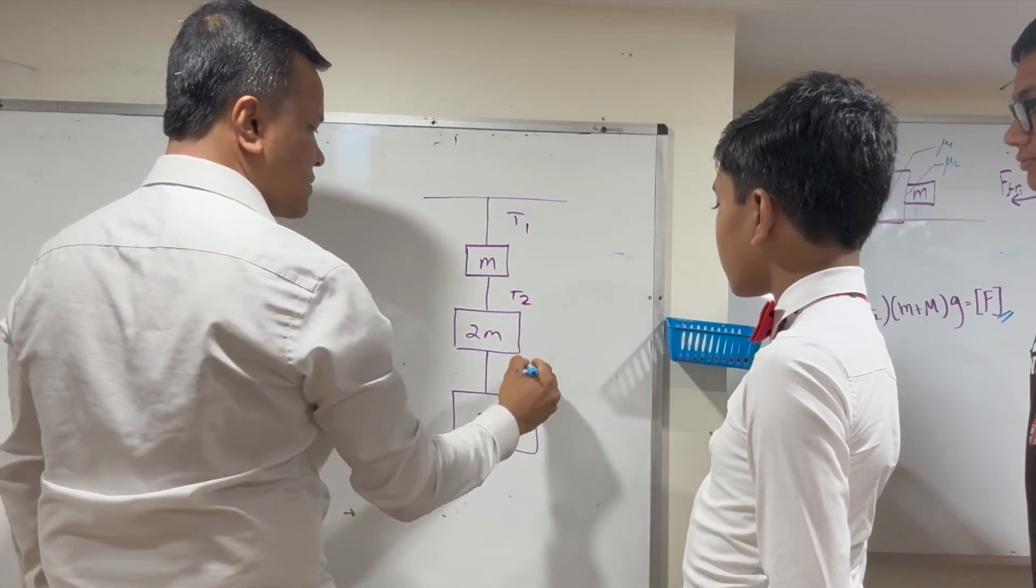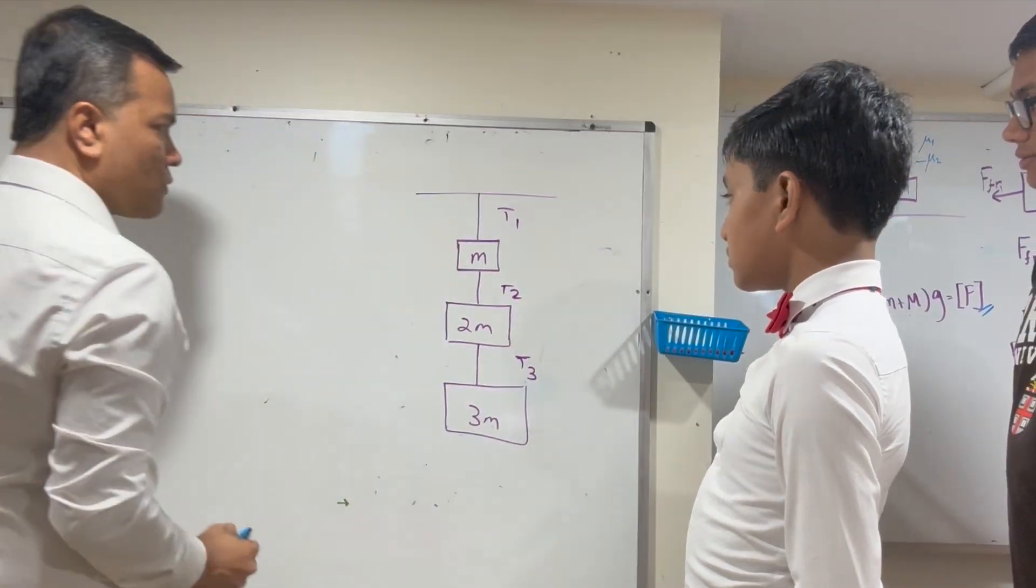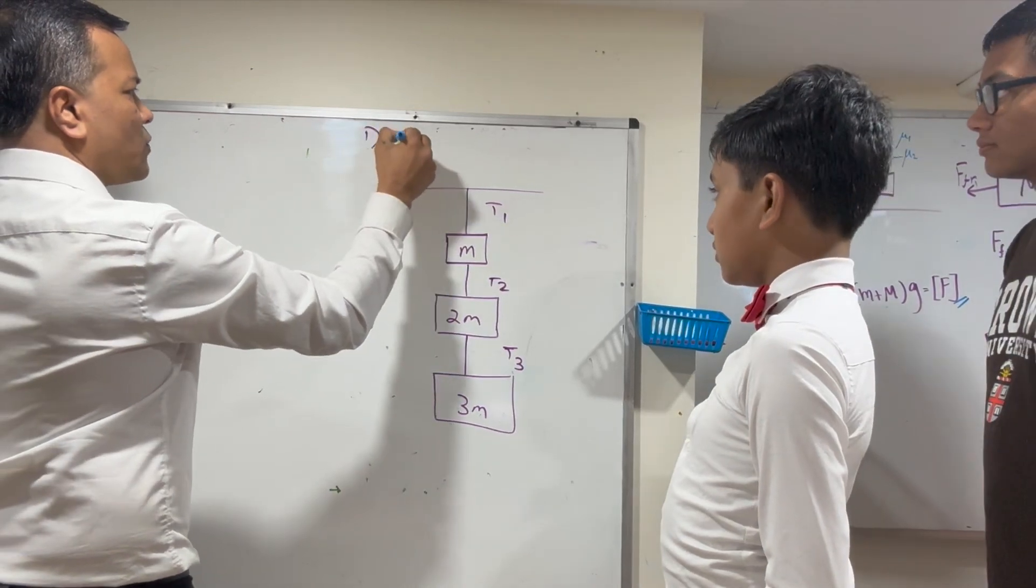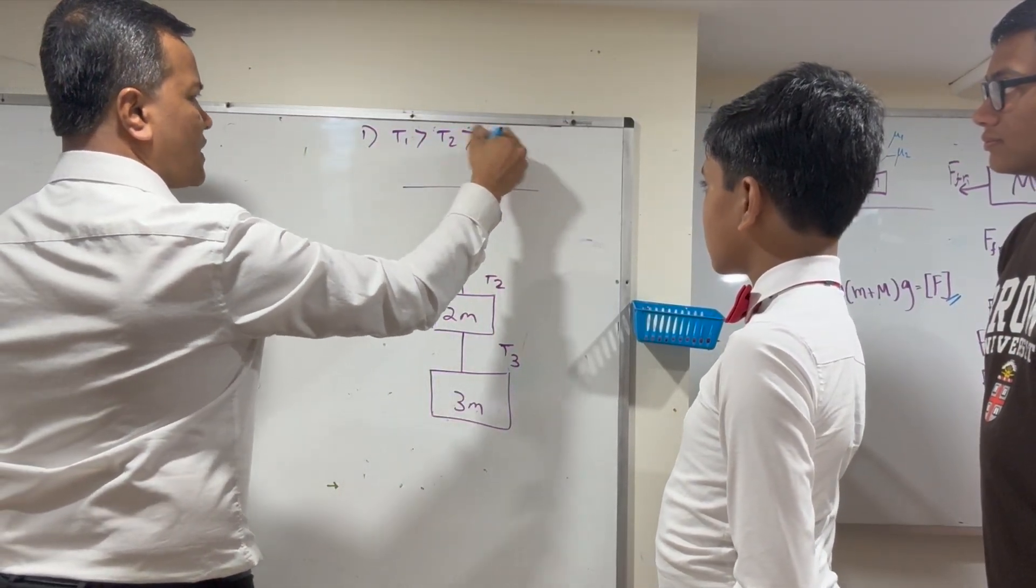This one T2, and this one T3. What are you going to prove? That T1 is greater than T2 is greater than T3.